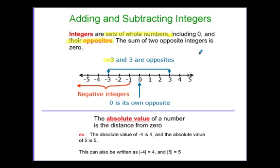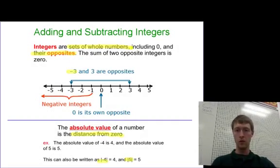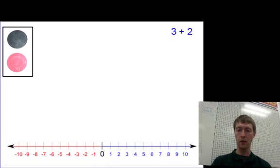Absolute value of a number is its distance from zero. We'll use that today as we discuss adding and subtracting integers. The symbol is two vertical lines around the number itself. The absolute value of negative four is four because it is four spaces from zero on the number line. Absolute value of five is obviously five, because it's five spaces away. So with these definitions in mind, let's go ahead and look at a couple examples.